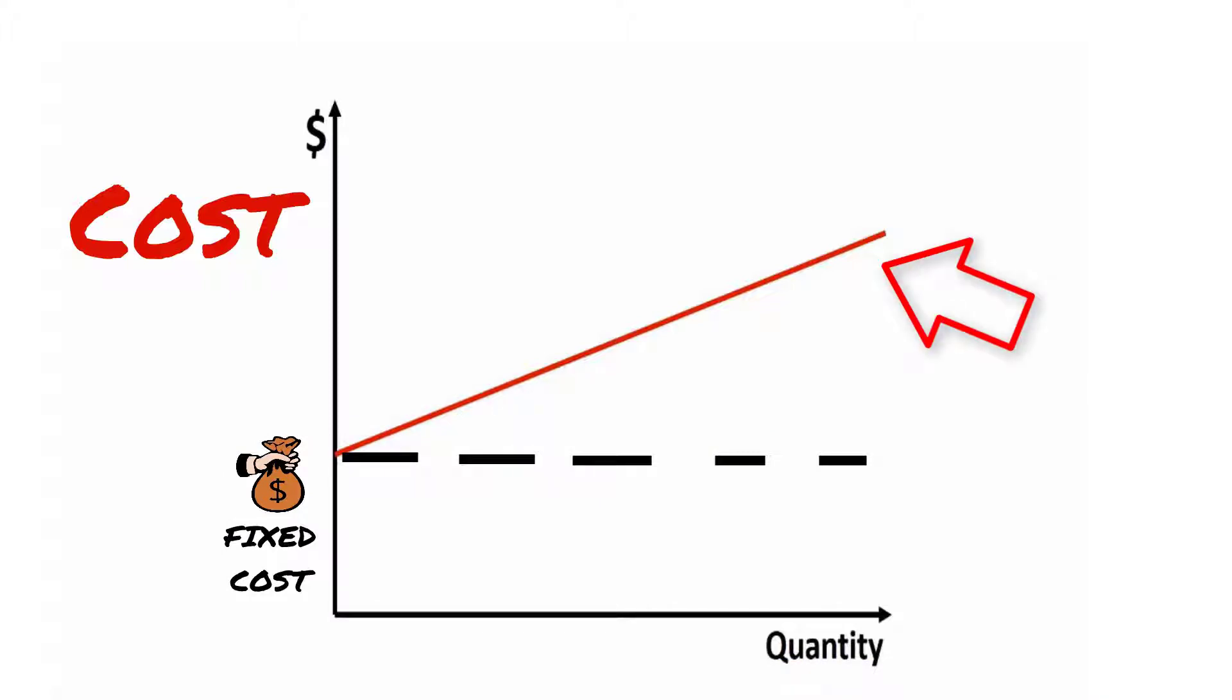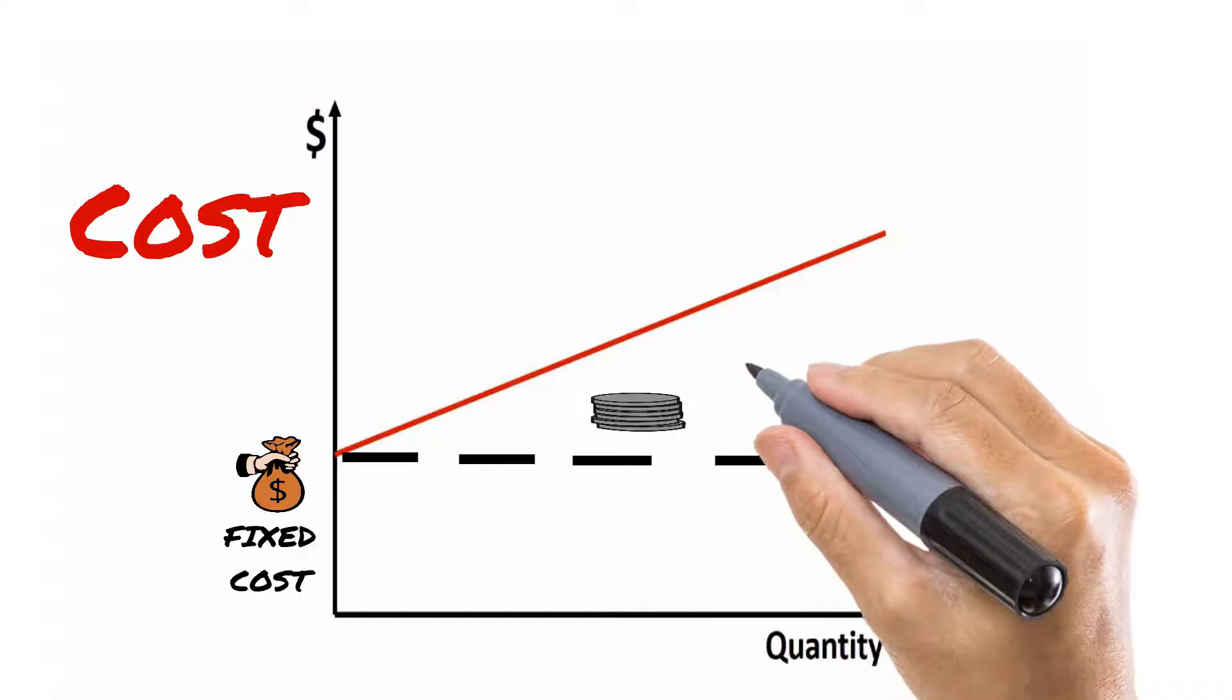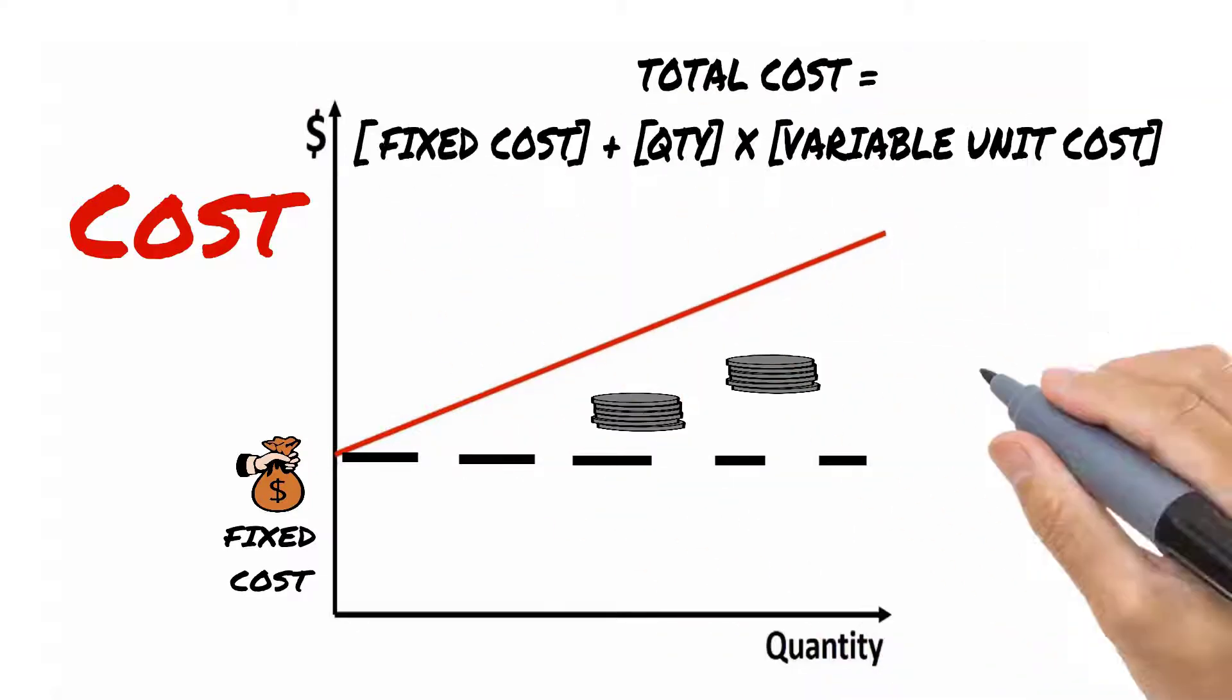The red line represents the total cost. That is, the fixed costs plus the direct variable costs per unit produced.